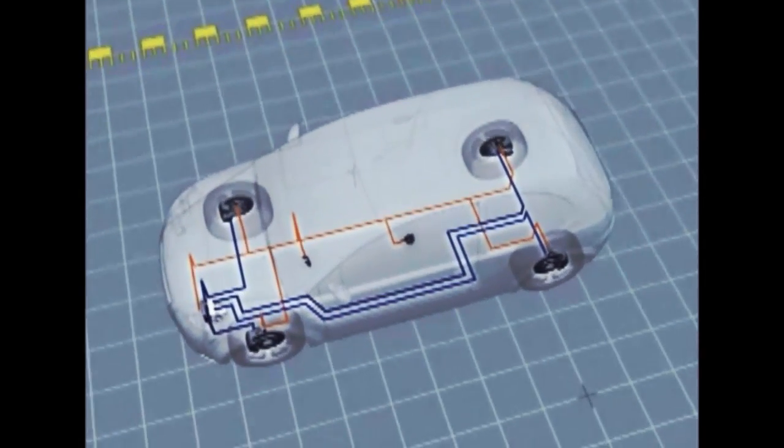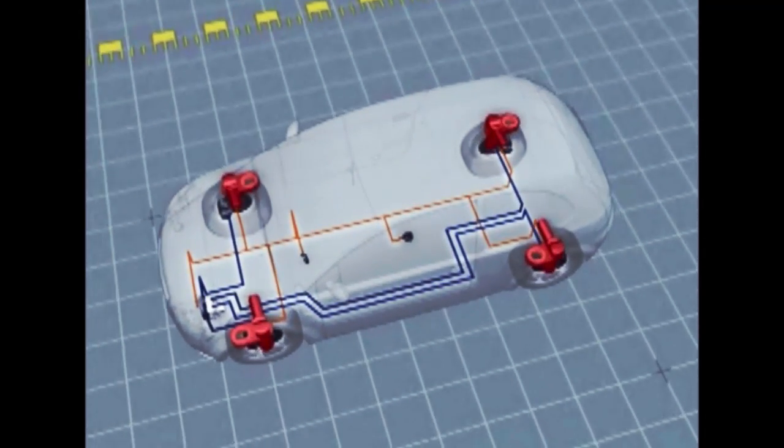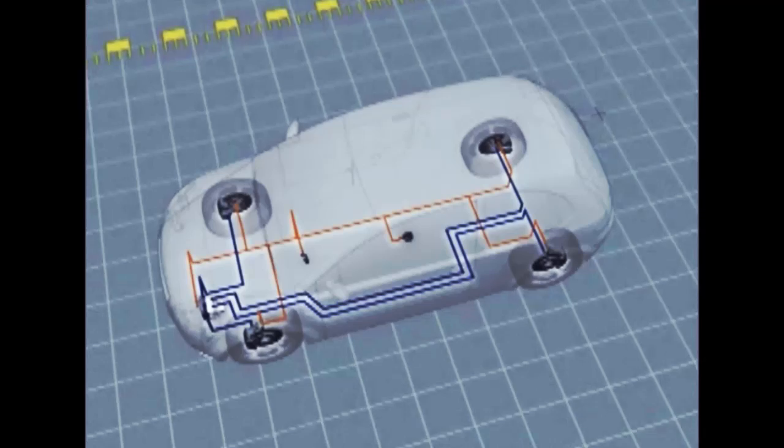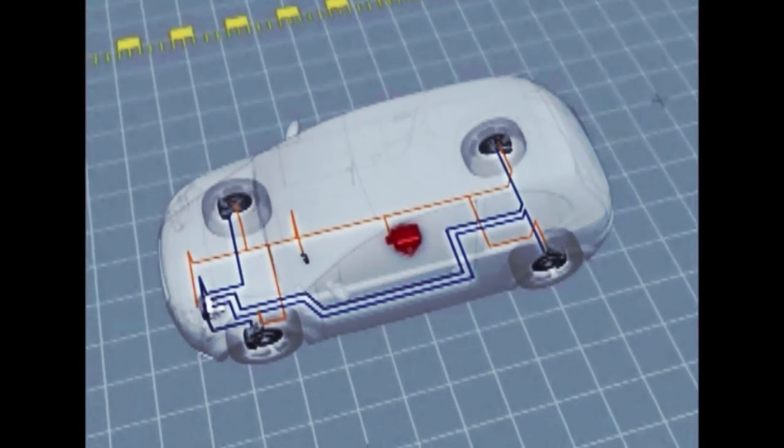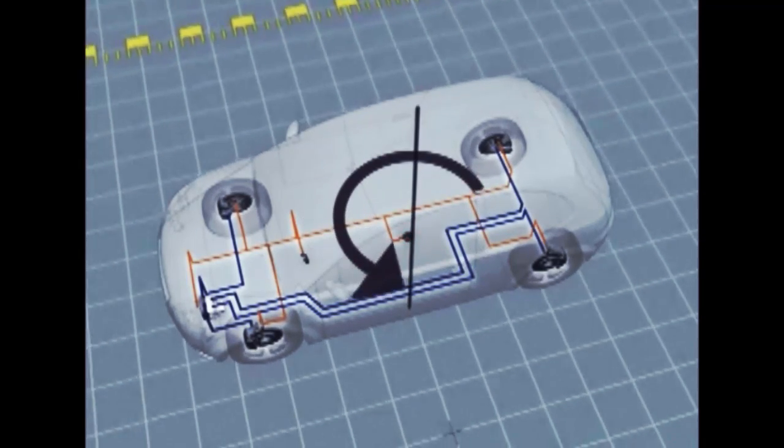ESC is comprised of the following components. A speed sensor on each wheel. A rotation rate sensor measures the car's rotation around its center line.